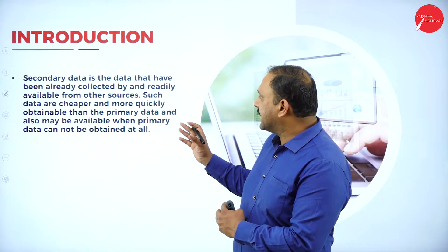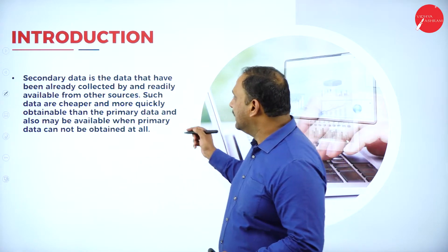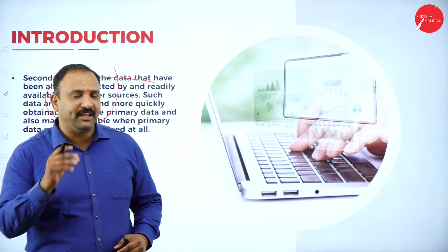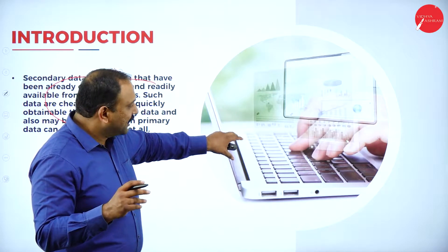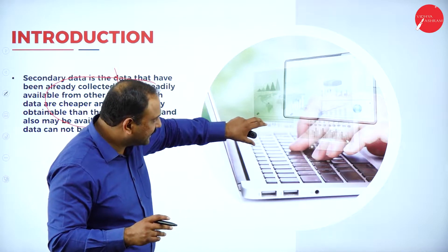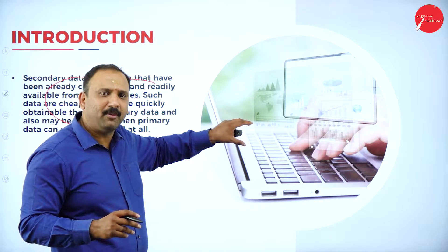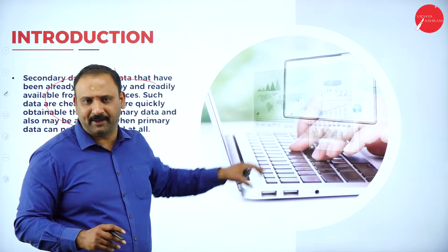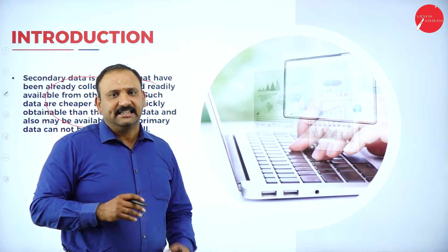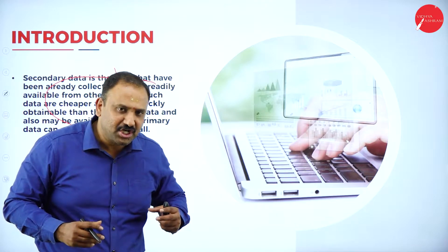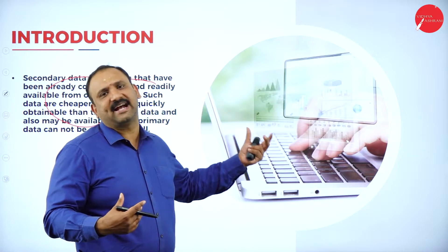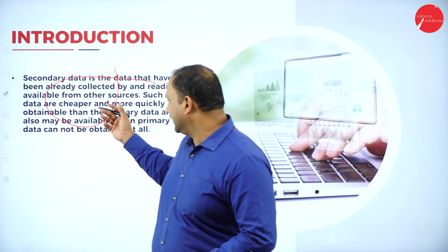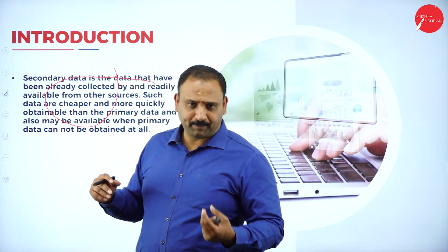Secondary data is the data that has already been collected and readily available from other resources. When we talk about secondary data, the data is already there — in the form of Google, internet public resources, or already published in journals. This is data which has already been researched, already typed across, and taken care of. It represents the effort already put in by researchers and is available for the public to read.